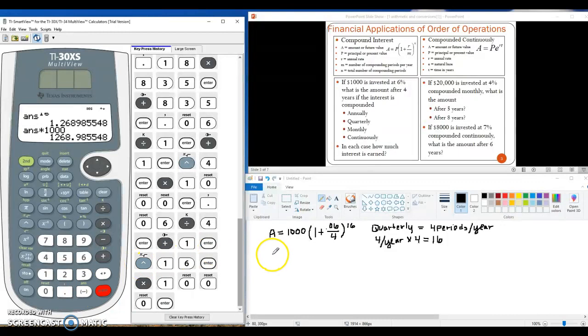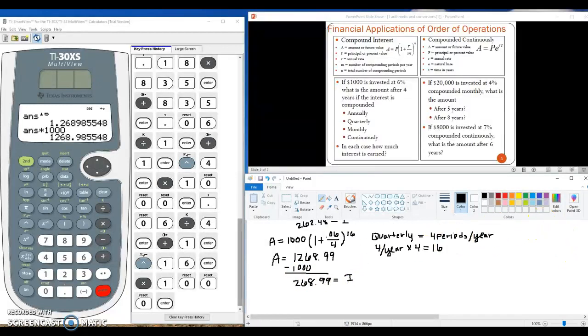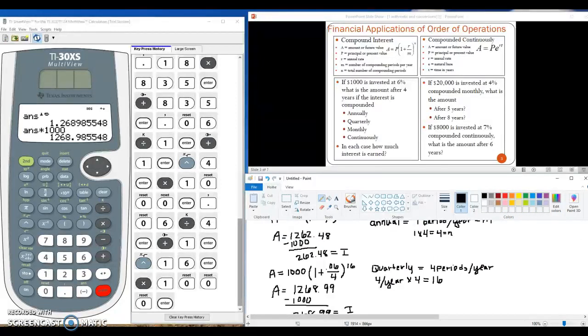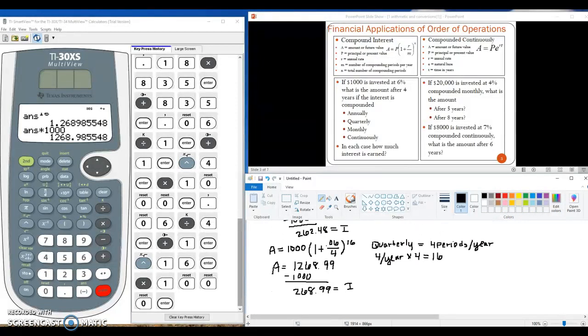So now we have that the amount is $1,268.99. If we subtract the 1000 that was originally invested, we get that there are $268.99 of interest. So nice thing about compound interest is that if you have it compounded more often, you make just a little bit more. So here we made 262, here we made 268.